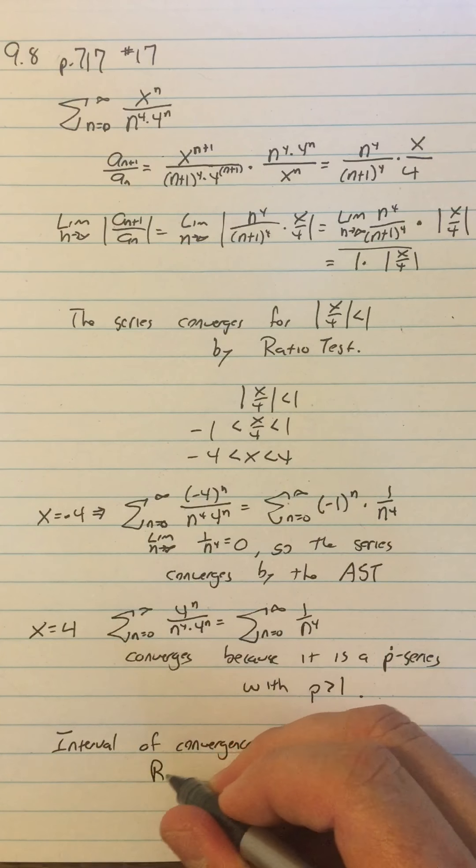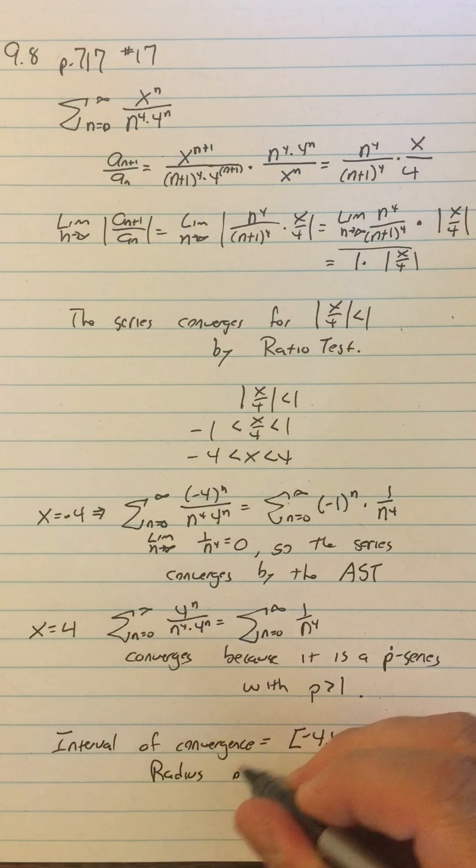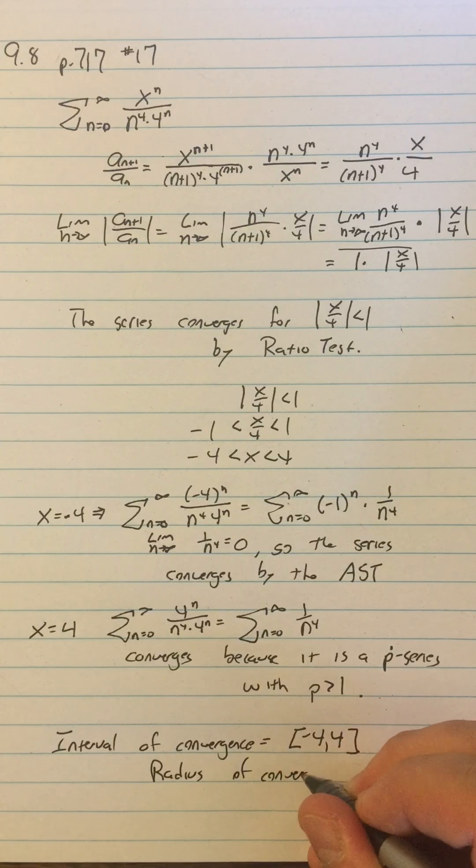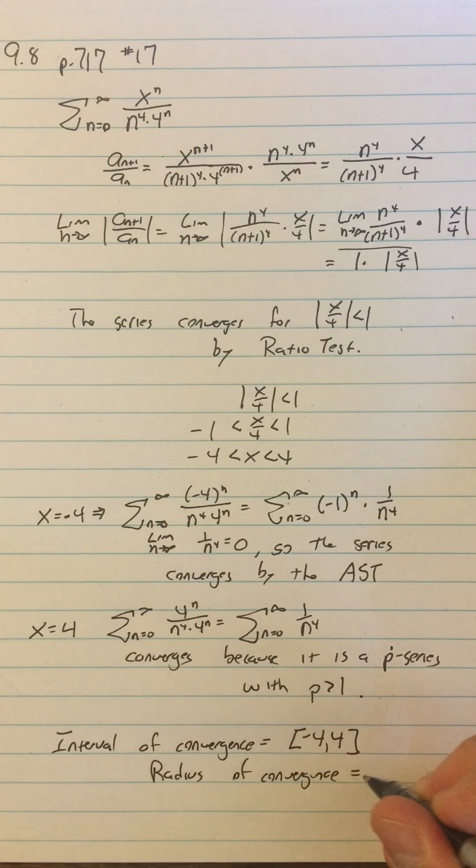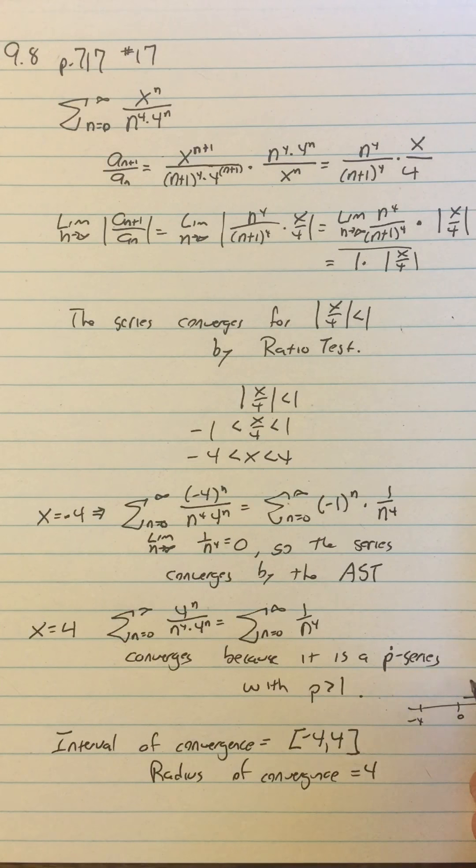And then I can say that the radius of convergence equals 4. So if you just think geometrically, we're centered at 0. We're going from negative 4 to 4. The radius is 4.